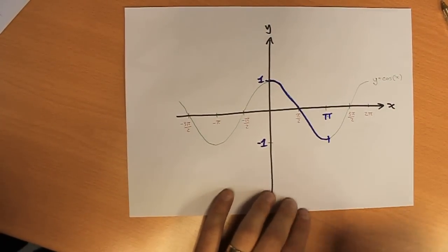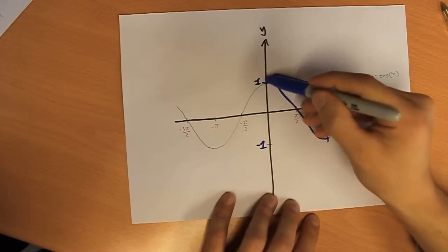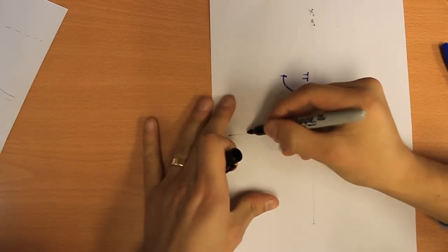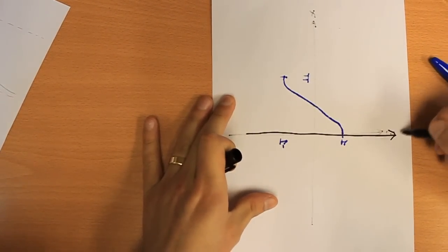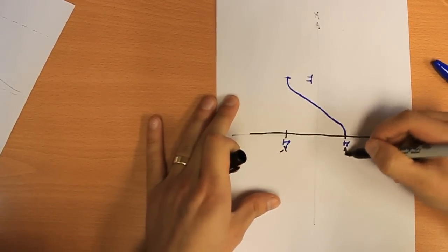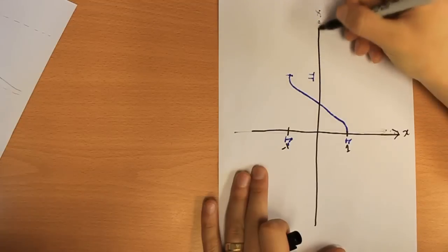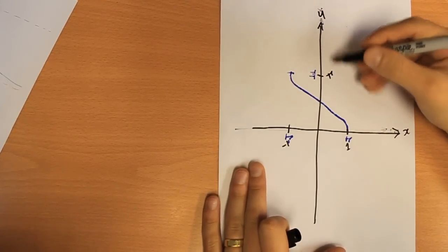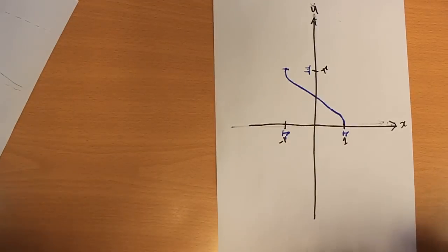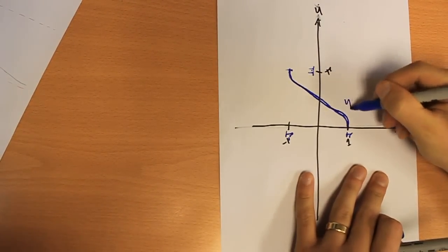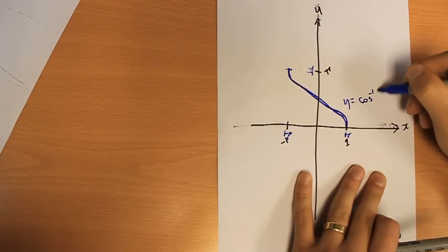So when we want to find y equals cos to minus 1 of x, we are using this principal one-to-one function and we swap y and x by flipping it over. And as if by magic, you can sketch a perfect inverse cosine function. It goes between minus 1 and 1 in the x direction, and we see up to pi in the y direction. And this blue line is y equals cos to minus 1 of x.